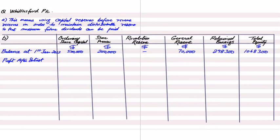The profit is given in note one, but it is a draft profit, meaning it is not finalized. There are some adjustments or errors that need to be taken care of, so this will be adjusted at the end of the question.